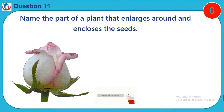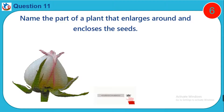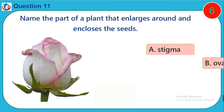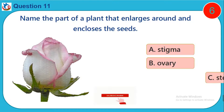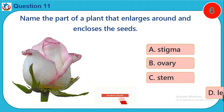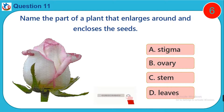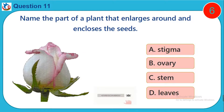Question 11. Name the part of a plant that enlarges around and encloses the seeds. A. Stigma. B. Ovary. C. Stem. D. Leaves.